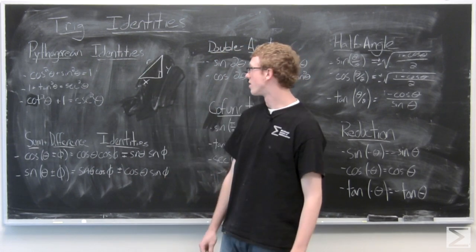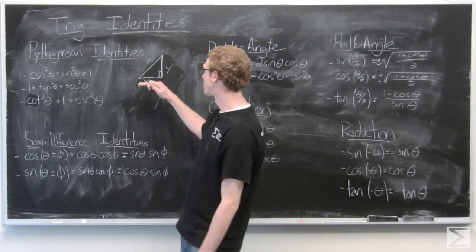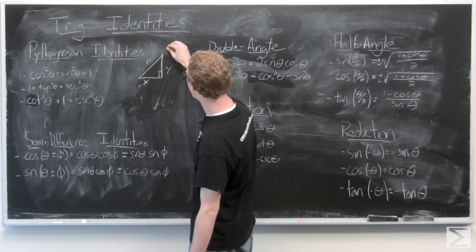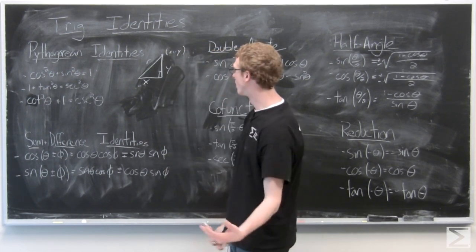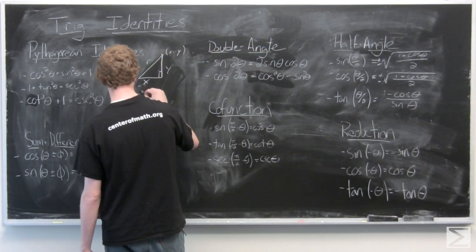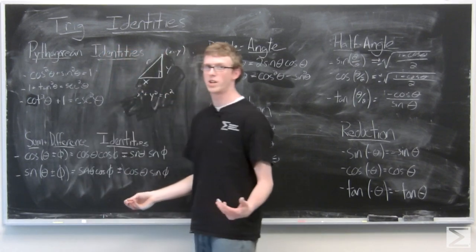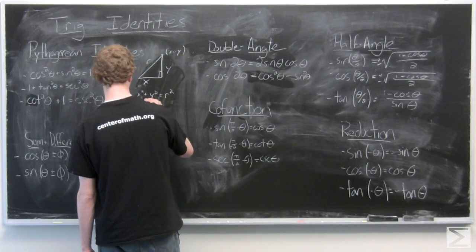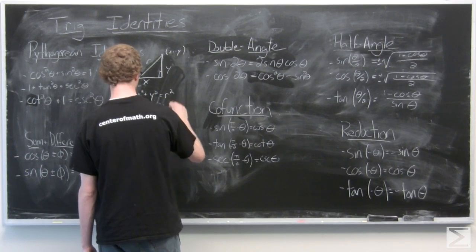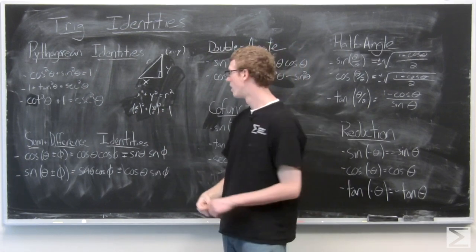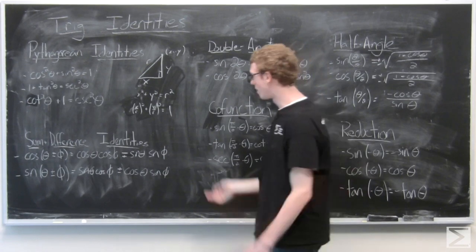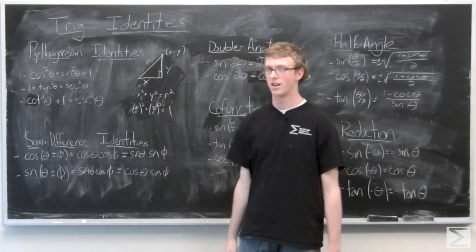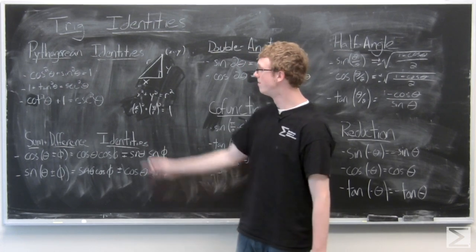The Pythagorean identities are the first set we're going to look at, and it's the only set we're going to prove. Let's take a look at a triangle with sides x, y, and hypotenuse r corresponding to an x, y coordinate. We know that x² + y² = r² because it's a right triangle. Dividing through by r² and rearranging, we get (x/r)² + (y/r)² = 1. Since x/r is cosine of theta and y/r is sine of theta, we have cosine²θ + sine²θ = 1.